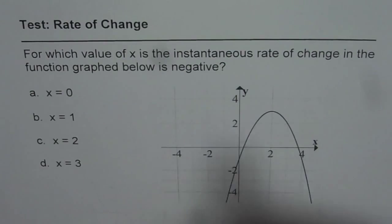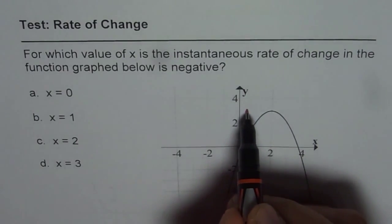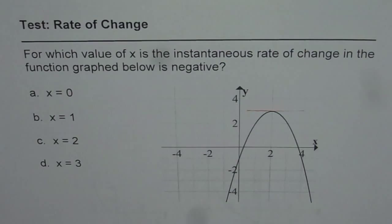If you look at these points, well, the turning point, if you draw a tangent here, the slope is 0. It is a horizontal line.